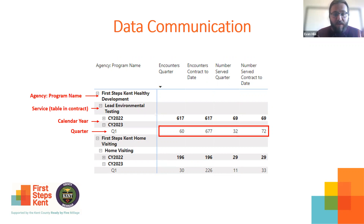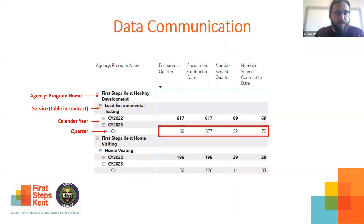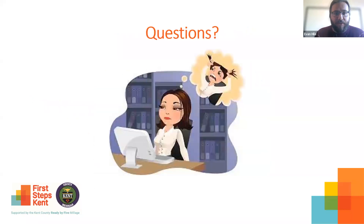These data tables will be going out on the 20th of the month after the end of a quarter, in time for you to be able to use them in your analysis for the quarterly reports, which will come due usually at the end of that month — so about 10 to 11 days later.